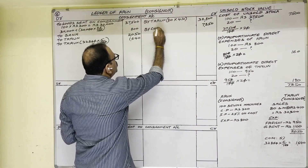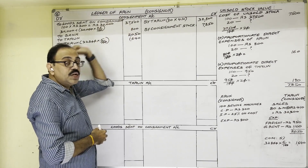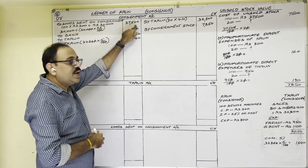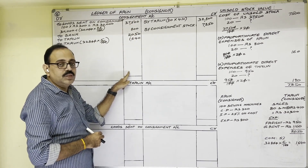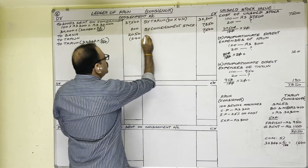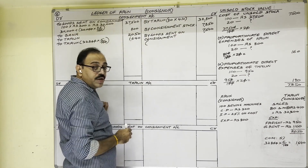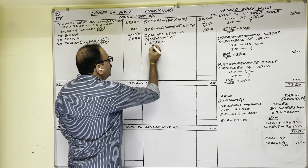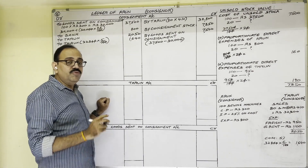Now for loading adjustments: cost price is 30,000 but we wrote invoice price of 37,500, so we wrote 7,500 extra — that is called loading. To cancel that loading, we write 7,500 on the credit side. We write in the particular column 'Goods Sent on Consignment.' How did that 7,500 come? Total goods invoice price 37,500 minus total goods cost price 30,000 equals 7,500.